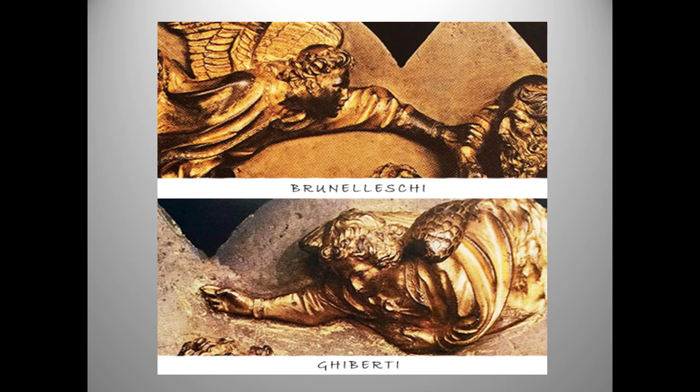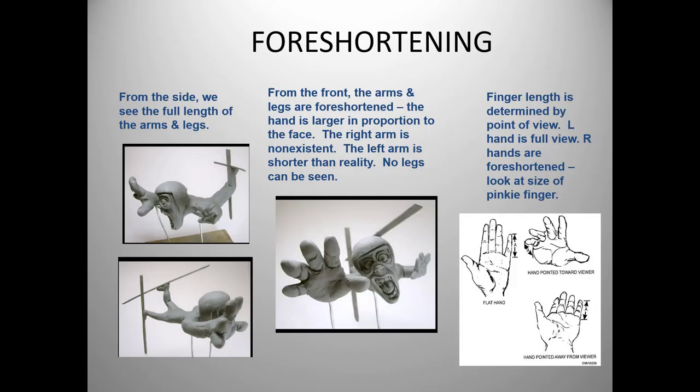Note how Ghiberti's angel captures the distortion of the scene by the eye when an object or figure is viewed at a distance or at an unusual angle. This rather busy slide, which I think is in your workbook, gives a helpful summary and illustration of foreshortening.